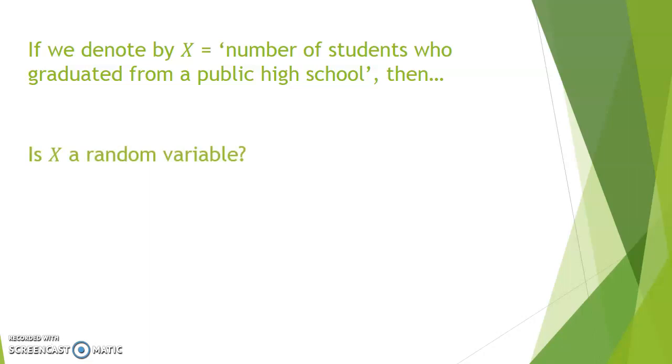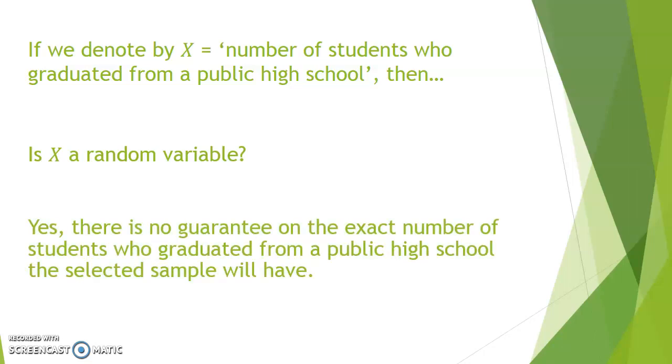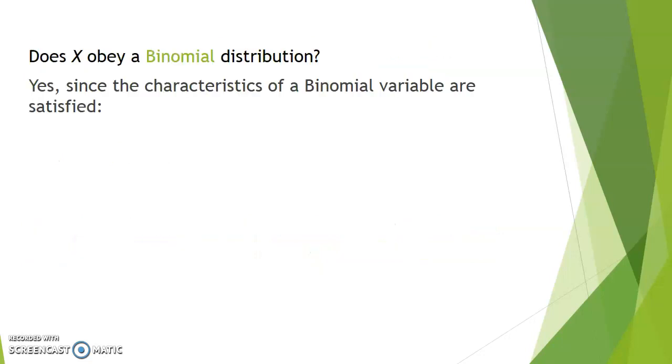Suppose X represents the number of students who did graduate from a public high school in our sample. Then X is definitely a random variable. Its value could be zero just as it could be 20. There's no guarantee on the exact number of students in our list that will have graduated from a public high school.